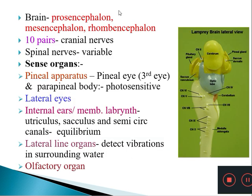The brain has three regions: the forebrain (prosencephalon), the midbrain (mesencephalon), and the hindbrain (rhombencephalon). Arising from the brain are 10 pairs of cranial nerves, and from the spinal cord spinal nerves arise in variable numbers.